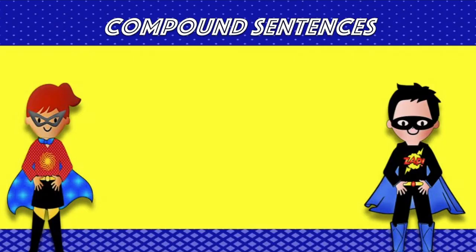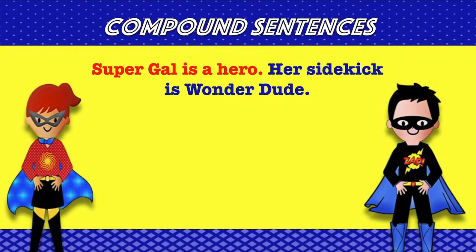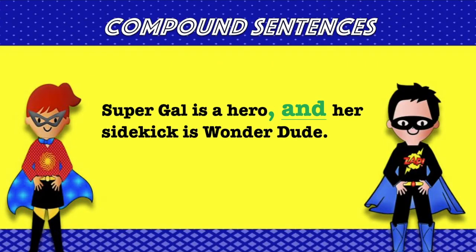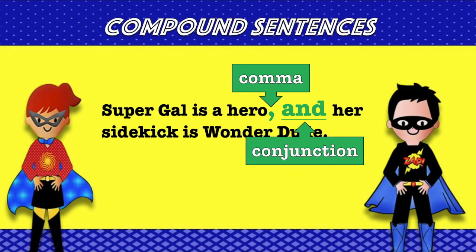Let's look at an example of how to write a compound sentence. Here we have two clauses: Supergal is a hero. Her sidekick is Wonder Dude. To rewrite this as a compound sentence, we would write: Supergal is a hero, and her sidekick is Wonder Dude. We added a comma to separate the clauses and the conjunction to make this a compound sentence.